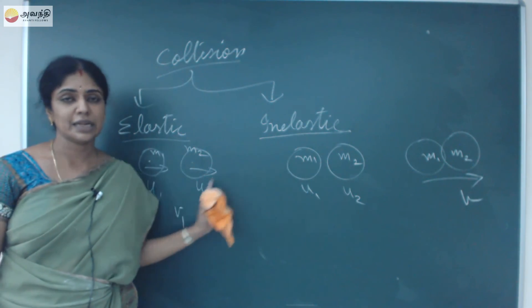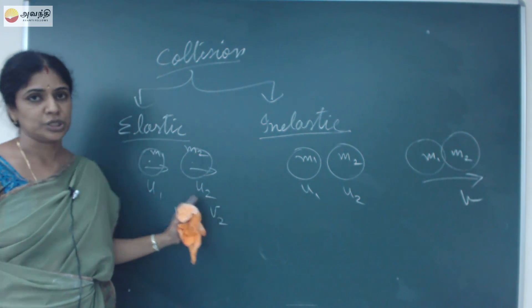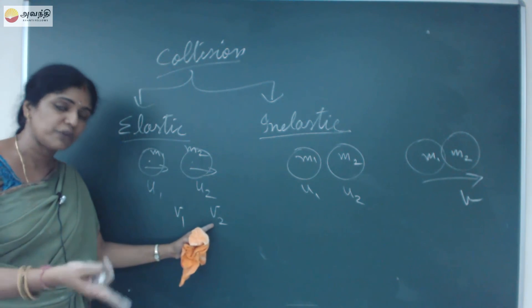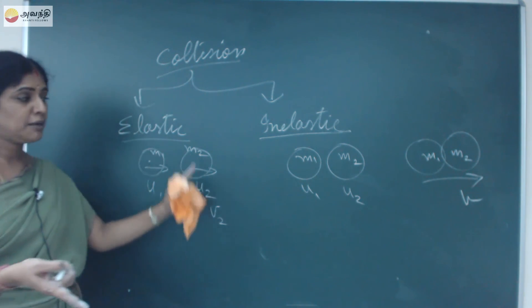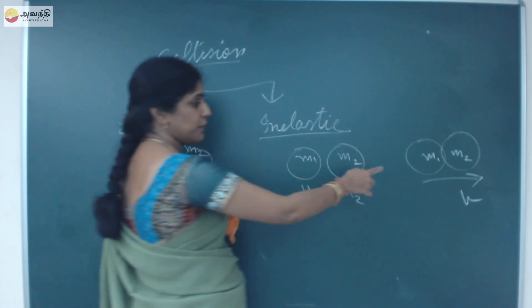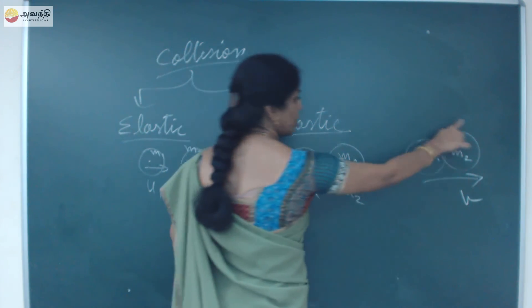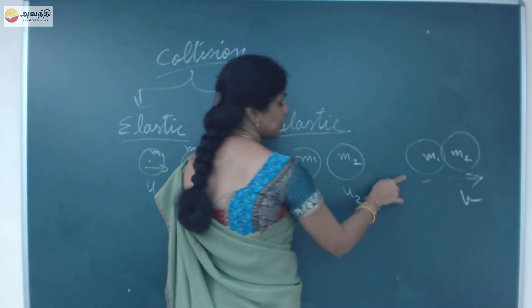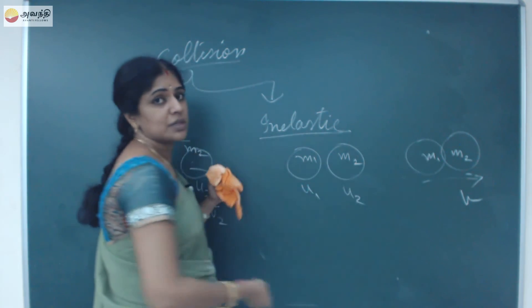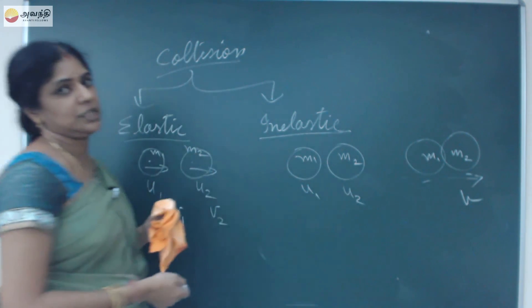That's the major difference between elastic and inelastic collision. In elastic collision, after collision they will travel with two different velocities. But in inelastic collision, both will stick onto each other and travel with the same velocity.